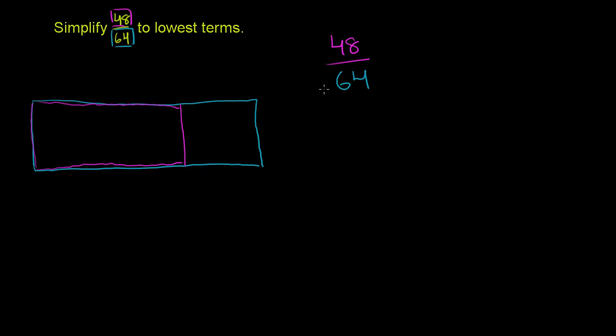Now, is there a way to group these 48 or these 64 into groups of numbers that will maybe simplify them a little bit? And to think about that, you'd have to think about what is the largest factor that is common to both 48 and 64? Or you could think of it as what is their greatest common divisor.